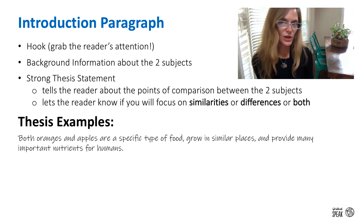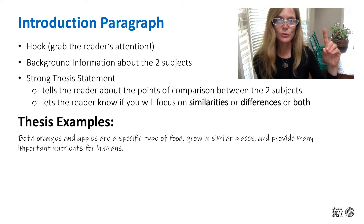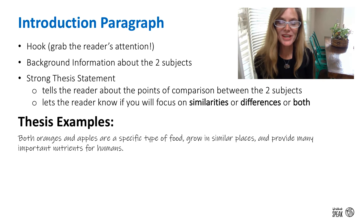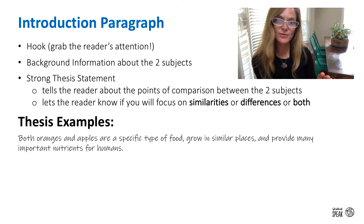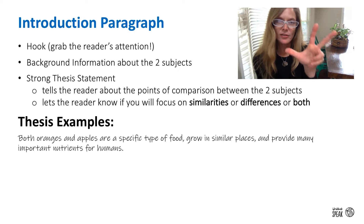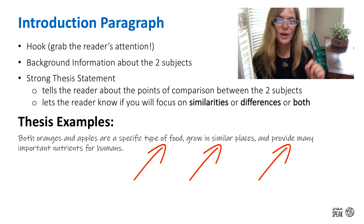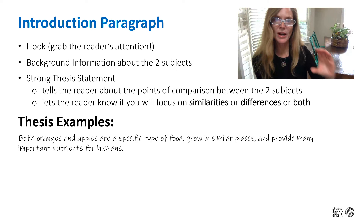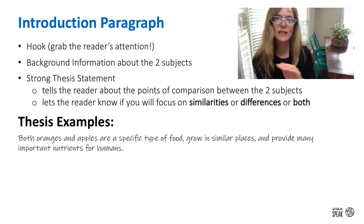I've done an example thesis for similarities, differences, and both to give you a better idea. For similarities, the thesis says: 'Both oranges and apples are a specific type of food grown in similar places and provide many important nutrients for humans.' I've mentioned three points of comparison: they're a type of food, they grow in similar places, and they provide important nutrients. Each body paragraph will focus on one specific point of comparison mentioned in the thesis, in that same order.